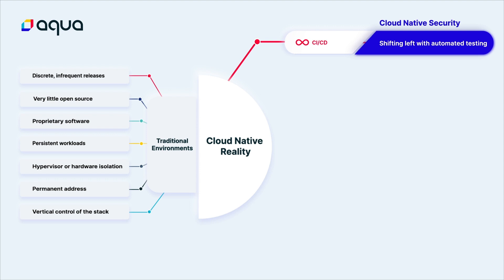The incorporation of open-source code and the dependencies involved creates an entirely new attack surface. To move faster, many developers will use others' images, which themselves may be based on third-party images or obtained from public libraries, obscuring visibility into the true contents and intent of any image.